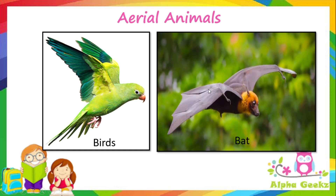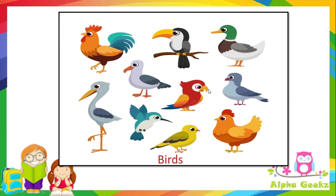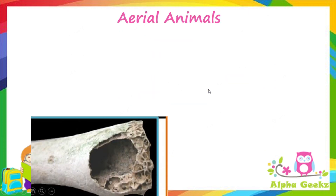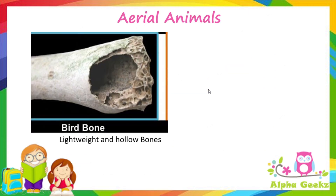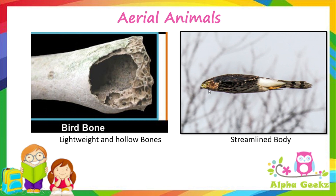Adaptation in aerial animals. Animals like birds and bats spend a lot of time flying in the air — such animals are called aerial animals. Birds possess a number of features which help them to fly. Birds have light and hollow bones which make their bodies less dense, thus facilitating flight. Birds also have a streamlined, boat-shaped body that helps them cut through the air easily.